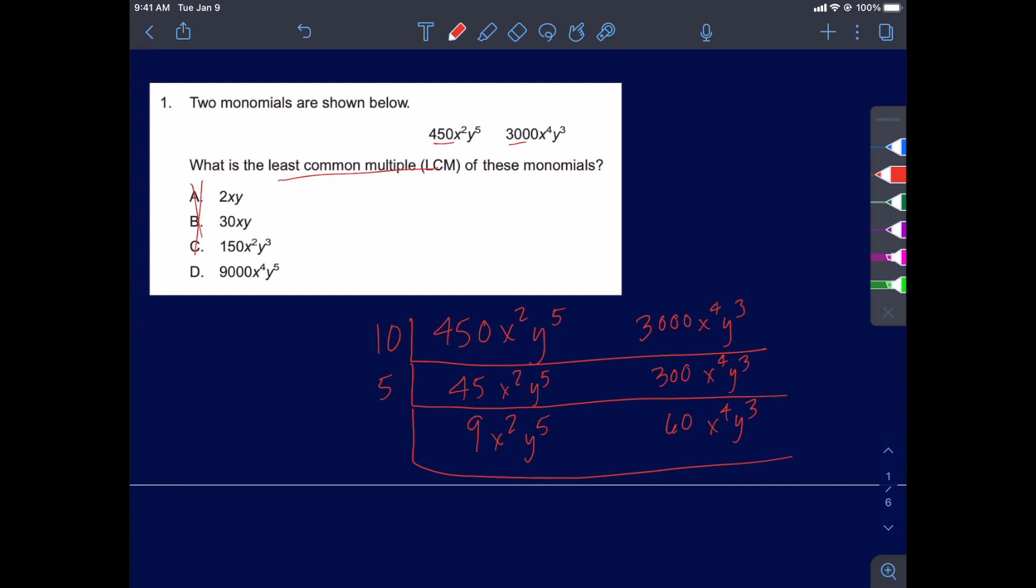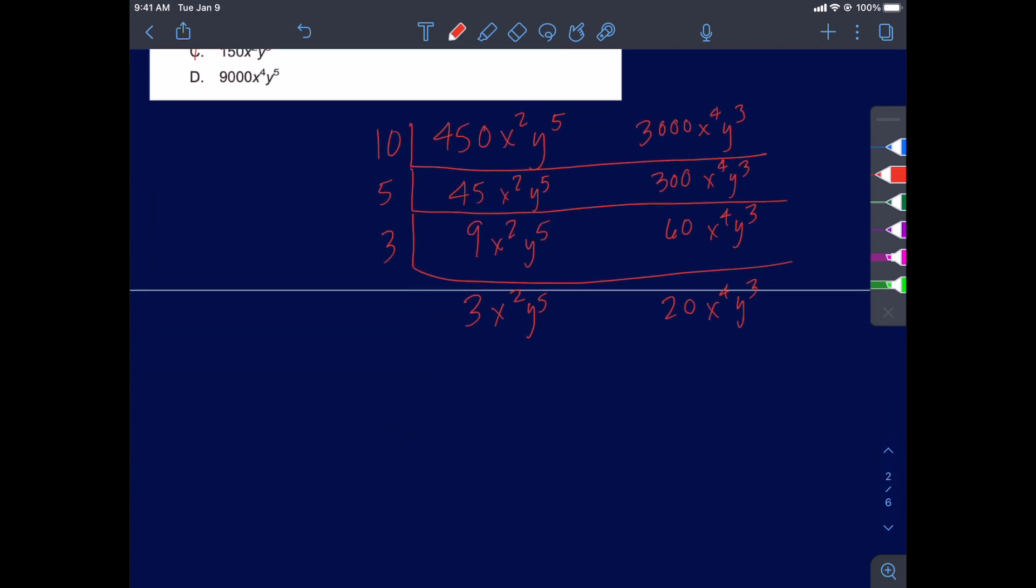Still there's some numbers that go in. I see a 3 that goes in. So 3 goes into 9, 3 times, x squared y to the 5th. And into 60, 20 times. And we still have the x to the 4th and y to the 3rd. And at this point, nothing goes into the 3 and the 20 anymore. So we've taken care of the coefficients.